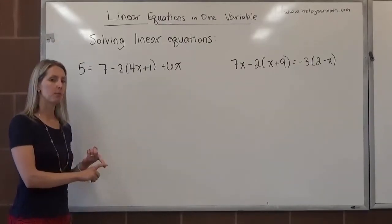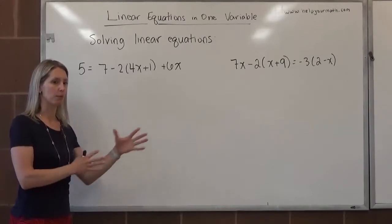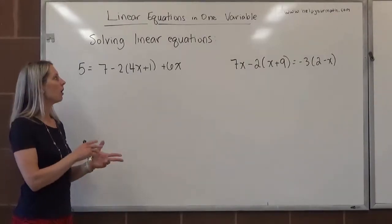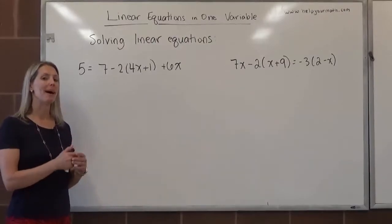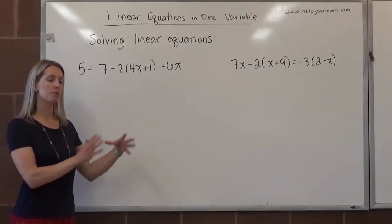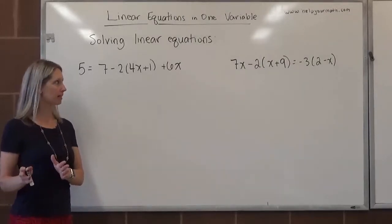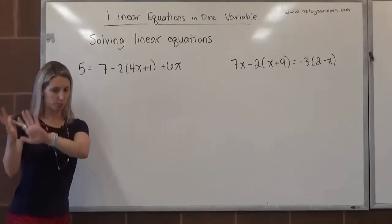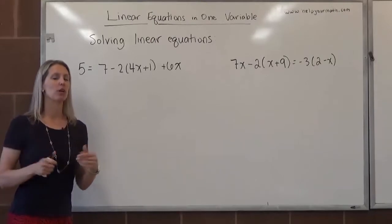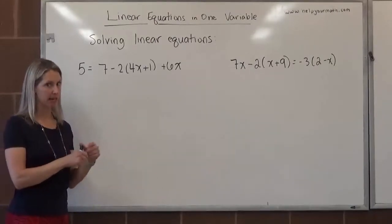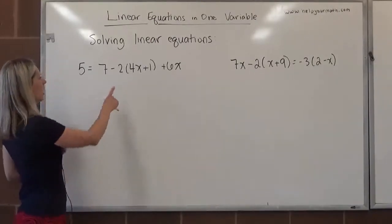If there's parentheses, we want to use the distributive property to distribute whatever's in front of them if there's something being multiplied. And if there's like terms, we want to combine the like terms. When like terms are in the same expression, they're both on the right hand side or both on the left hand side, we combine them as they are. We do not use inverse operations when we're simplifying an expression. Let's get started.